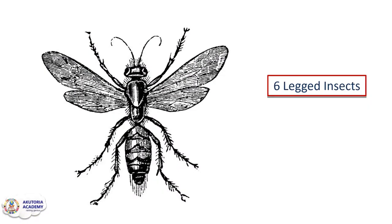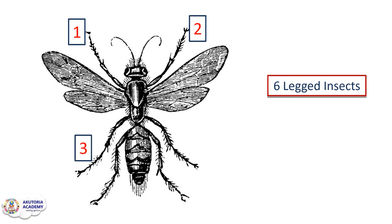Another characteristic of insects is that some insects have six legs while others have eight legs. Those having six legs are called six-legged insects. Let's see this example of an insect and count how many legs it has — one, two, three, four, five, and six. This insect has six legs, so it's a six-legged insect.